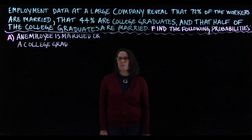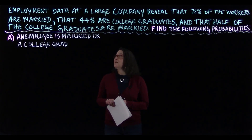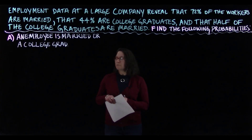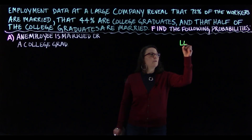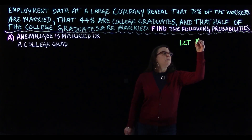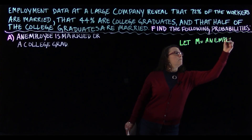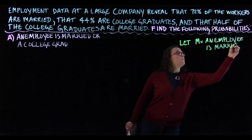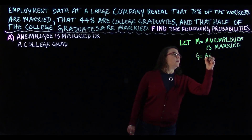The first thing I'm going to do is declare my variables — what events are happening — and then use that in my notation. We've really got two main events here: either employees are married or they're college graduates. So I'm going to let M equal 'an employee is married,' and let G equal 'an employee is a college graduate.'